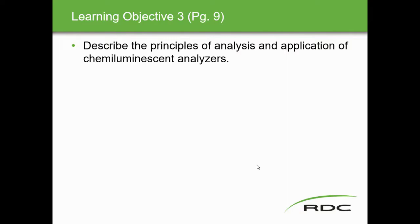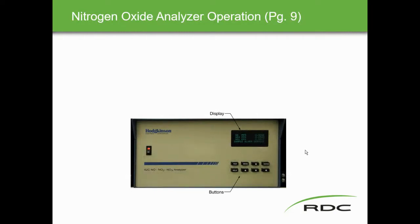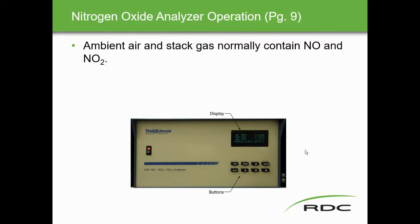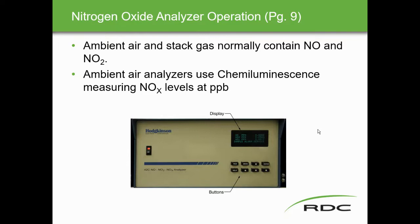Learning objective three: describe the principles of analysis and application of chemiluminescent analyzers. Stack gas normally contains both NO and NO2 from combustion. Ambient air analyzers use chemiluminescence to measure NOx levels at parts per billion. By contrast, UV analyzers measure stack gas NO2 at parts per million — chemiluminescence gives us the much lower detection range needed for ambient monitoring.